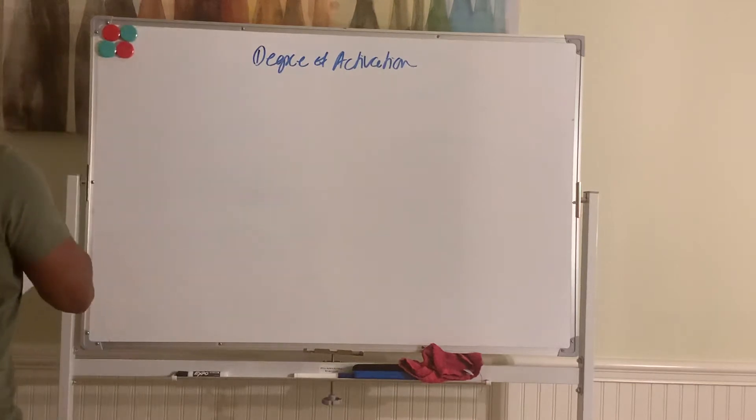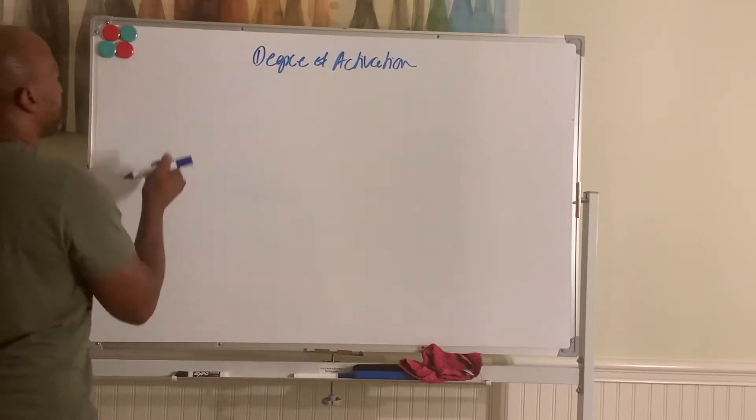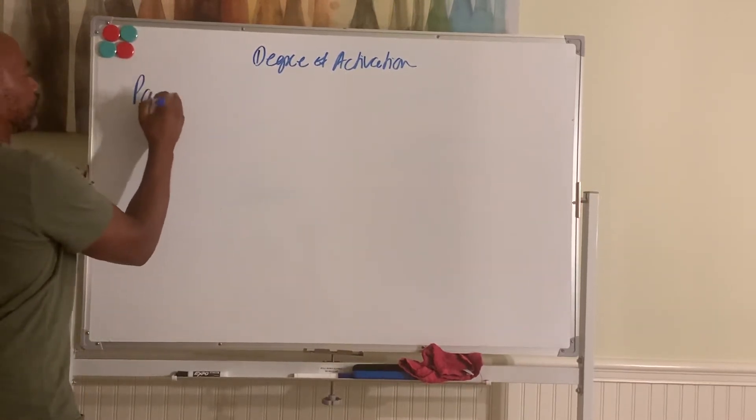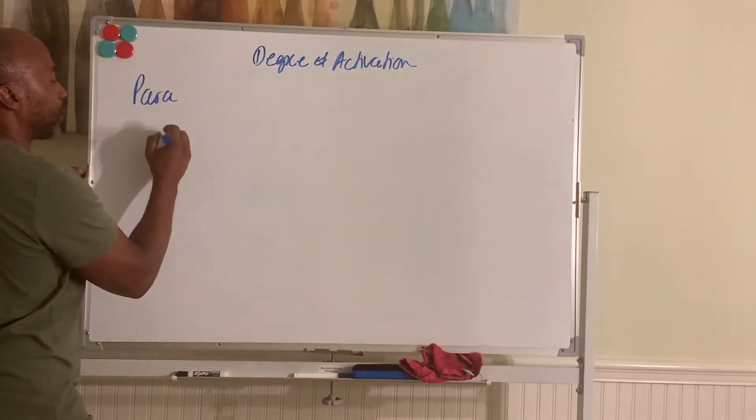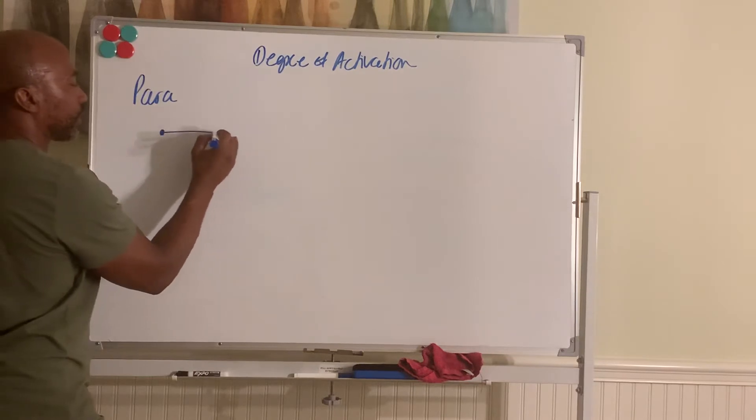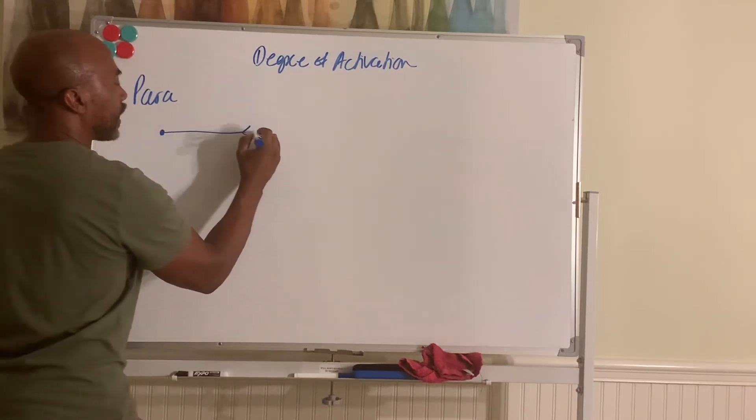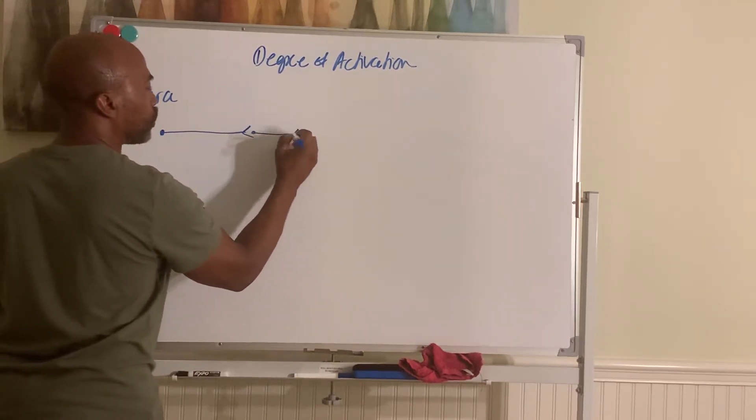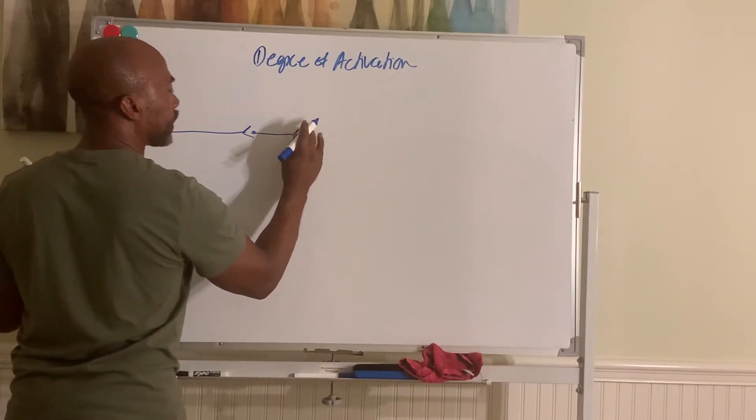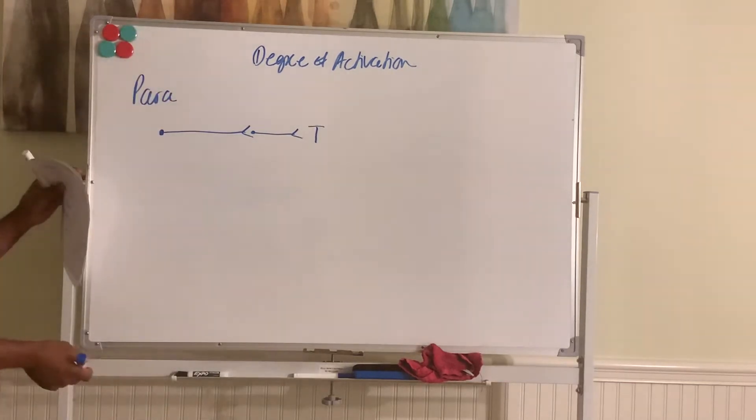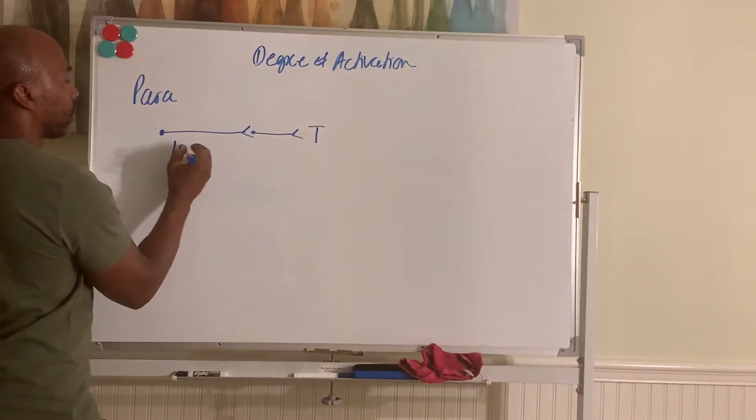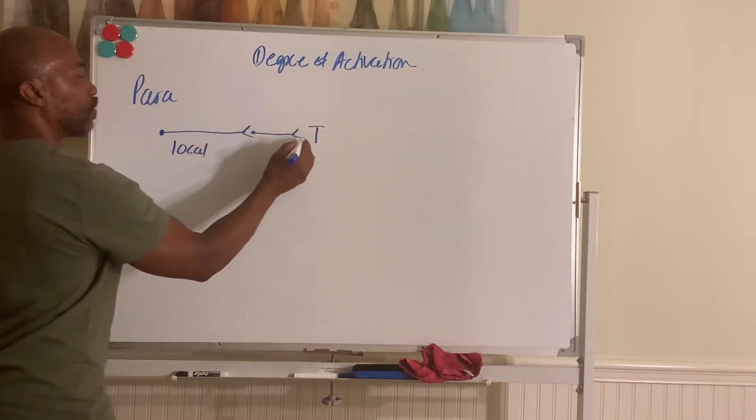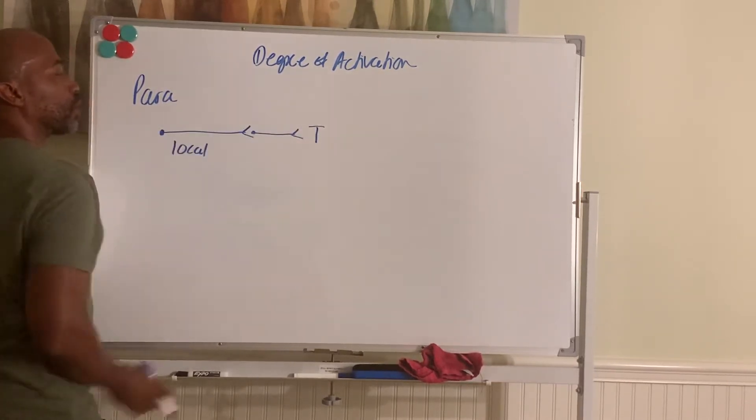So the parasympathetic division. When it gets to its target cells. So you typically have one pre-neuron that synapse with a single post-neuron that then goes to its target. And so it's one to one to one. And so this effect tends to be local and very discrete, very specific to a target.